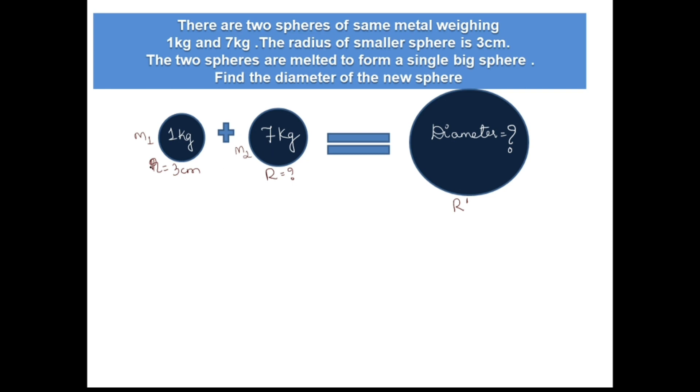So here I have taken m1 as 1 kg and m2 equal to 7 kg. If you see the question, there are a few keywords given. First one is 'melted'. The word melted will take us to volume formula, but here they have given in kg. So one more key is 'of same metal'. Let us see how these keywords will help us.